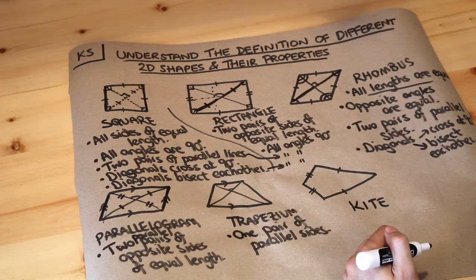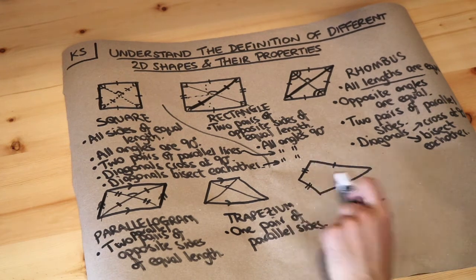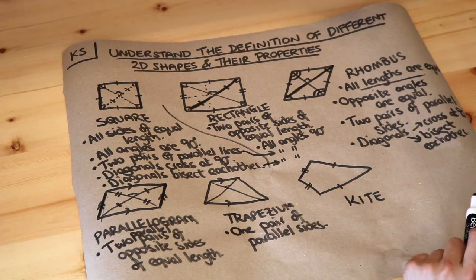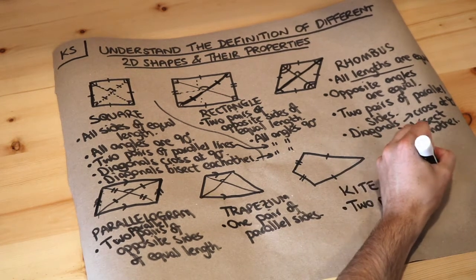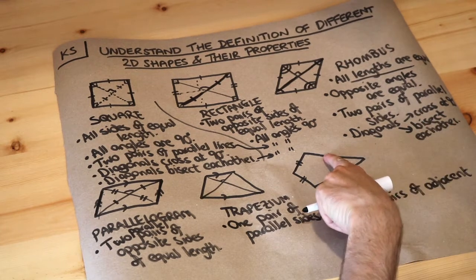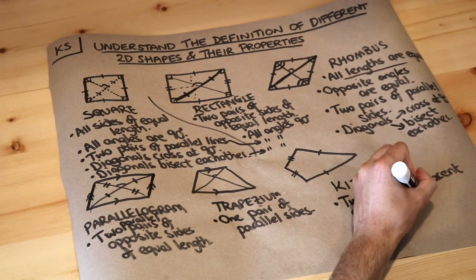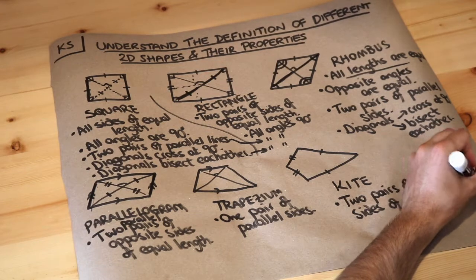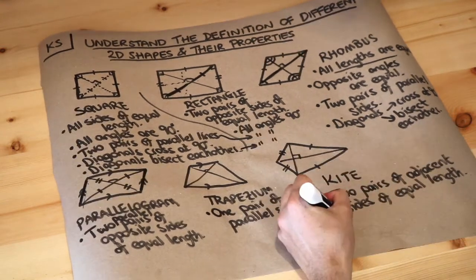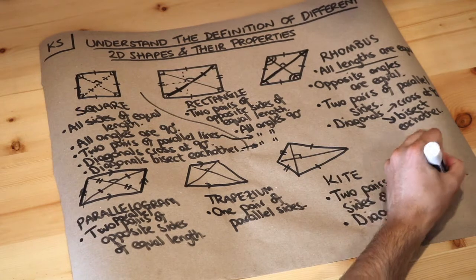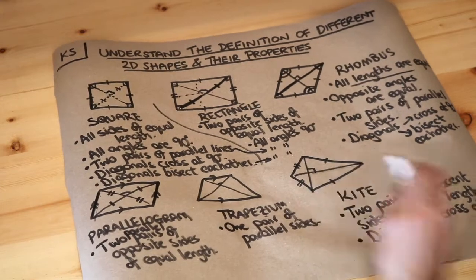The final shape is known as a kite, and it looks like a physical kite. The marks on the sides show that two pairs of adjacent sides are equal in length — adjacent meaning next to each other. So the definition of a kite is that it has two pairs of adjacent sides of equal length. If we draw the diagonals, they cross at a right angle — 90 degrees. However, they don't bisect each other, because this length is not the same as that length.